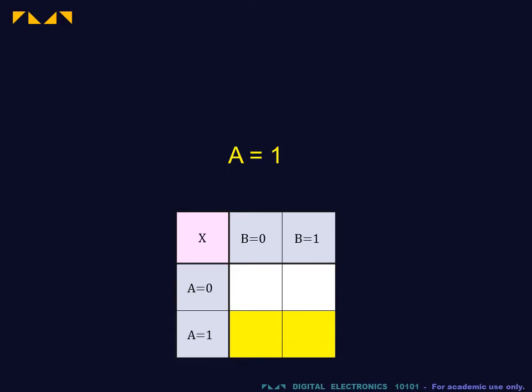Hence, A equals 1 will consist of the two cells forming the second row, and B equals 0, the two cells forming the first column.